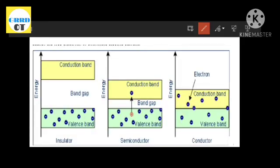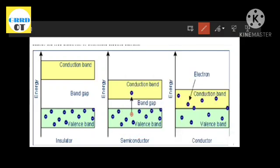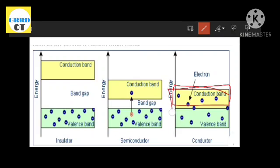Due to this overlapping, even a slight potential difference causes the free electrons to constitute an electric current. The energy gap for a conductor is zero, because the valence band and conduction band overlap.